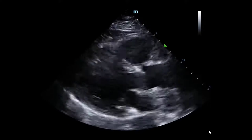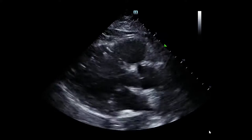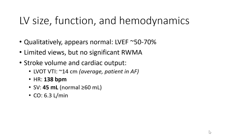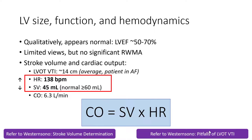We'll turn in a moment to discuss one tool for assessing relative sizes on the parasternal long axis. Our initial points of thought are: what is the LV size and function, and what is the RV size and function? Qualitatively, the left ventricle appeared relatively normal, with an ejection fraction perhaps around 50 to 70%, and we could not identify any significant regional wall motion abnormalities. We used the LVOT VTI — velocity time integral — to determine stroke volume, a surrogate that needs to be averaged in our patient who has atrial fibrillation. Based on a stroke volume of approximately 45 milliliters, we calculated cardiac output as stroke volume times heart rate, yielding roughly 6.3 litres per minute — a relatively normal range.